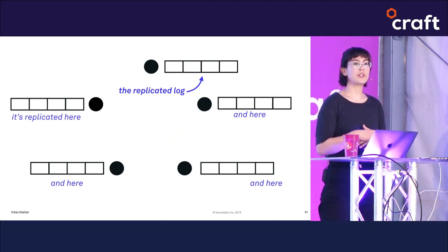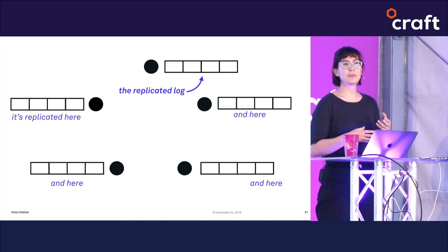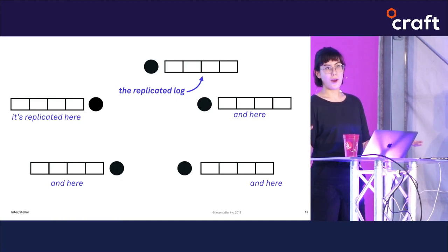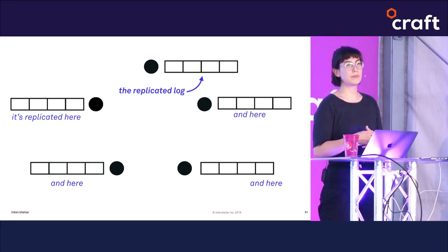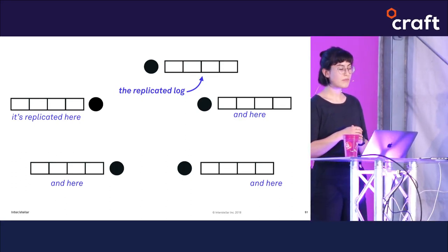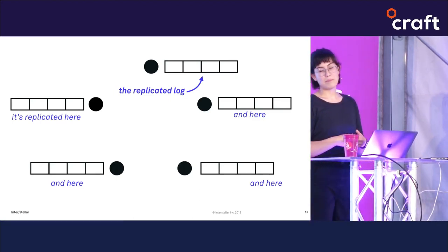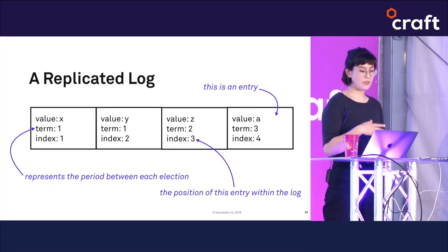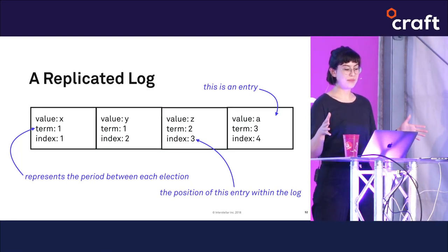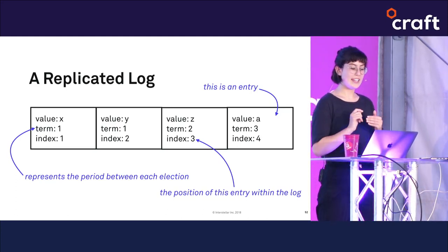In addition to introducing the concept of a leader, Raft also explicitly introduces the idea of a replicated log. In Paxos you might implicitly understand there's a log of all values the system has adopted, but it's not mentioned explicitly in the simplest form. This replicated log also exists in the blockchain world — the log is the blockchain itself. In Raft, the replicated log is a long list of entries where each entry has a value, a term number, and an index.